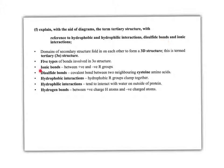Ionic bonds: some R groups are positive and negative, and positives attract negatives, which alters the way the structure folds. Disulfide bonds are covalent bonds occurring between two cysteine amino acids which contain sulfur — a bond between two sulfur atoms, hence disulfide bonds. Hydrophobic interactions: some R groups are nonpolar and hydrophobic, like the tail of a phospholipid.